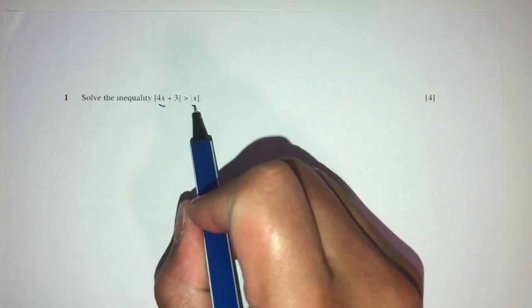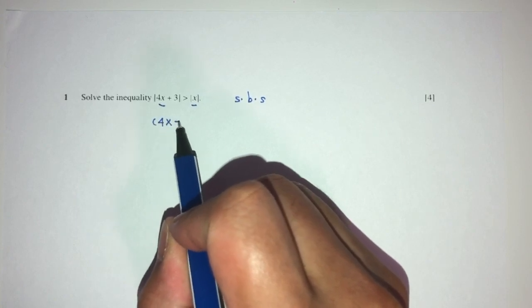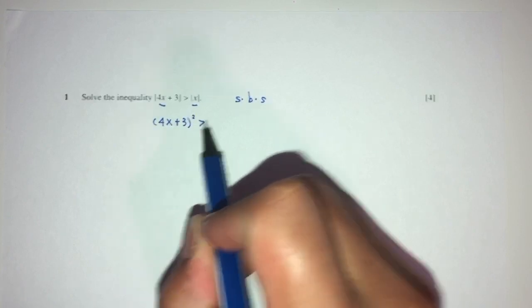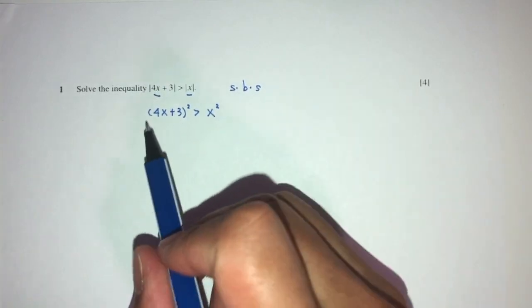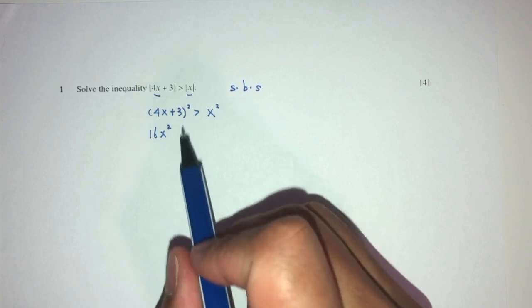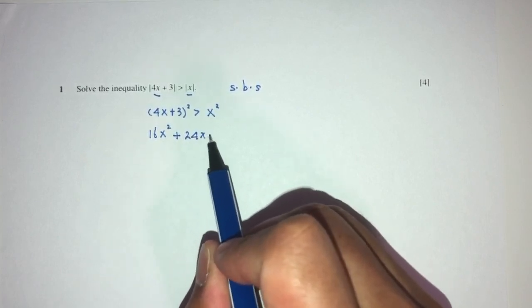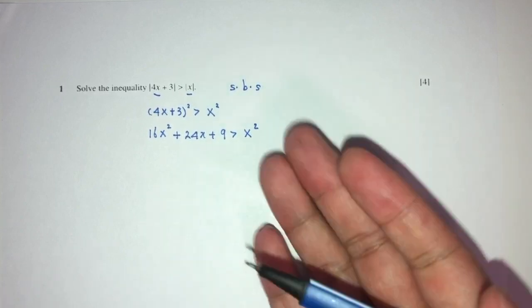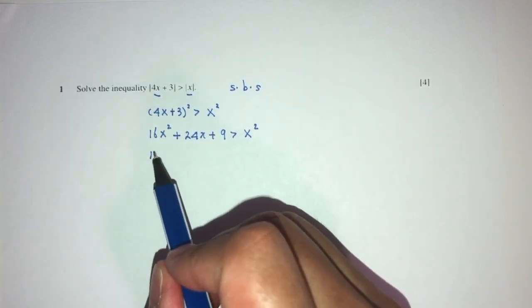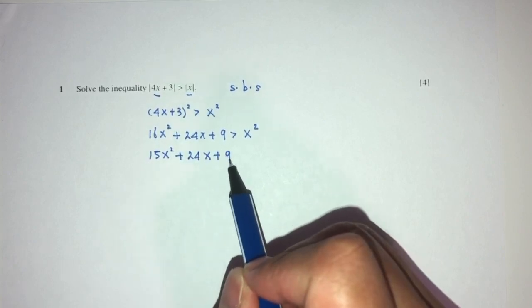Here we have question number one — solve this equation. We have x on both sides and modulus on both sides, so we square both sides. You will have (4x + 3)² > x². Let's expand. You will have 16x² + 24x + 9 > x².